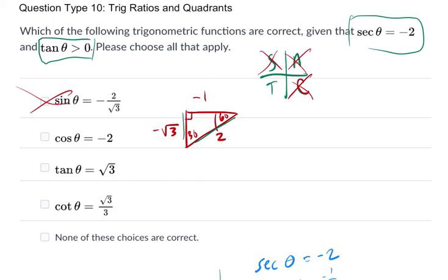It's wrong. The cosine of theta is negative 2. Well, cosine is adjacent over hypotenuse. So it's negative 1 over 2. So that's wrong.